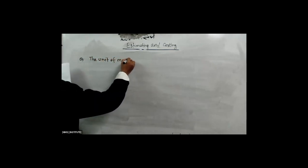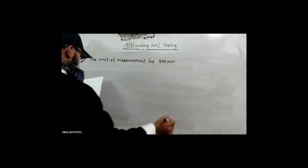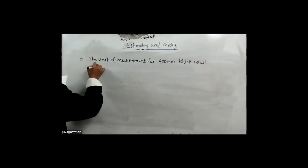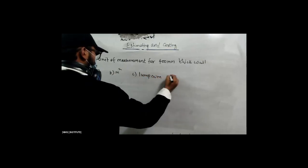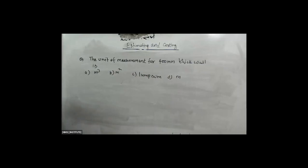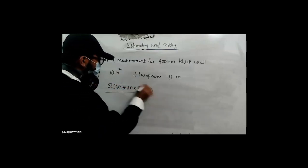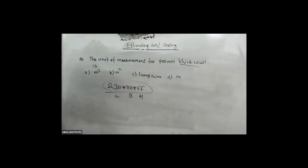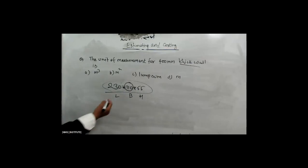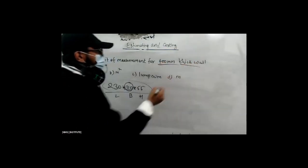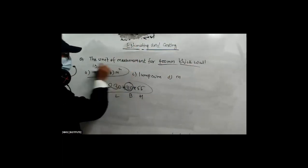The unit of measurement — 400 mm thick wall. Option A: meter cube. Option B: meter square. Option C: lump sum. Option D: meter. The answer is A — meter cube. Brick means body thickness wall. This is standard 1.10. Here, a 3 mm wall — how big is this? Meter cube.